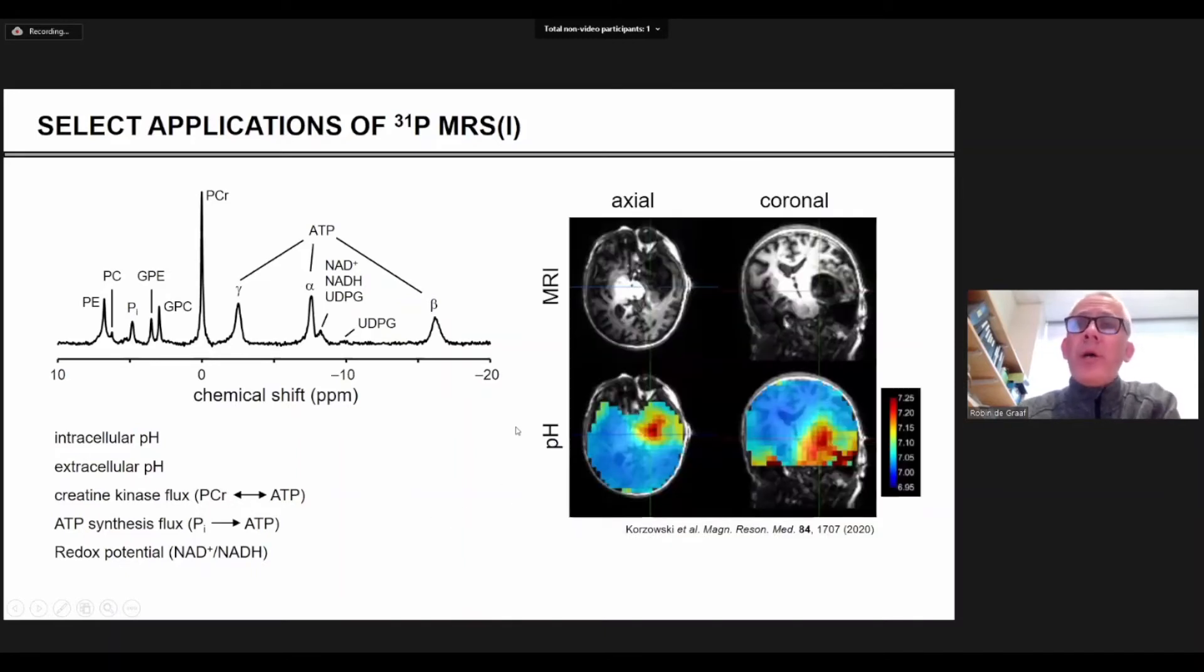Now this can also be done in 3D. This is a recent paper where they basically spatially mapped the pH. And you can see this is again in a brain tumor patient, that where the tumor is, the pH is also different.